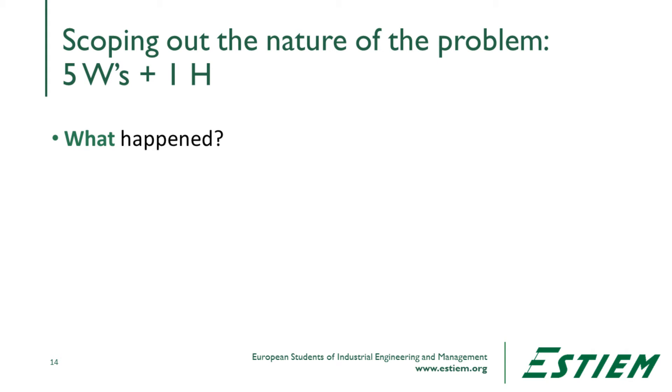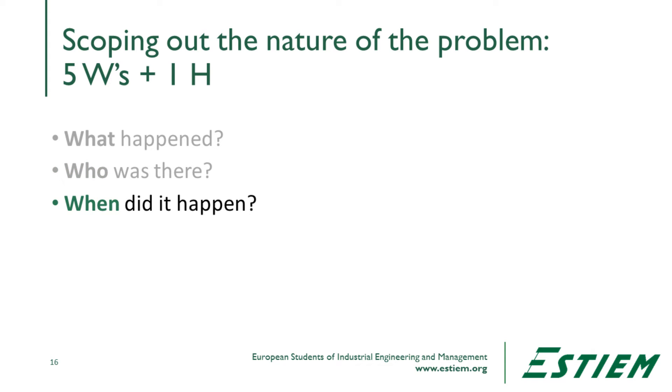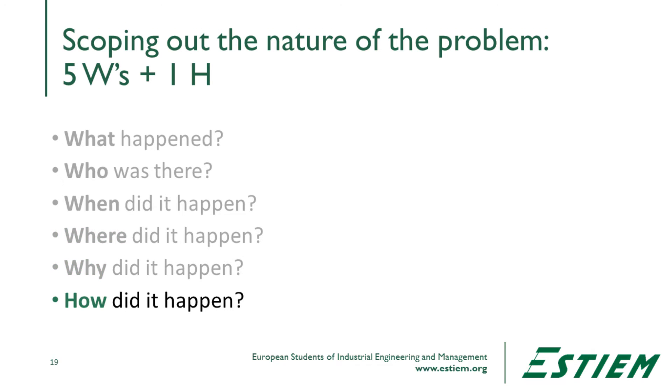The 5W1H method was originally defined for investigative reporters to describe a story. They ask five questions: What happened — the object? Who did it — the subject? When did it happen — the timing? Where did it happen — the location? Why did it happen — the purpose? And finally, how did it happen — the method by which we got this observation? Once we've answered all of those things, we've begun to describe the problem. But this is a problem narrative — a way to conceptually identify the problem — we have not yet operationally defined it as a problem statement.